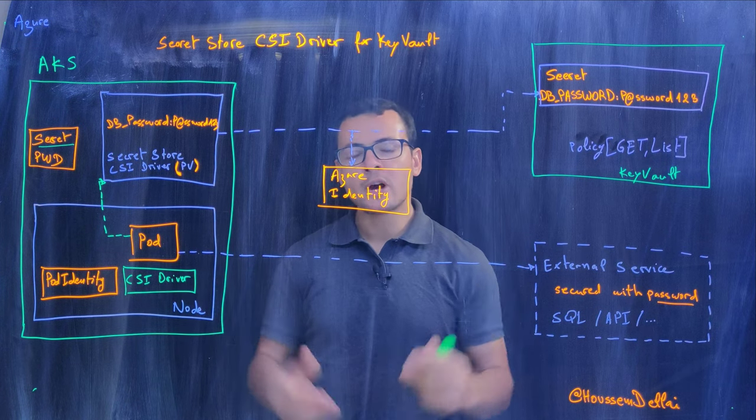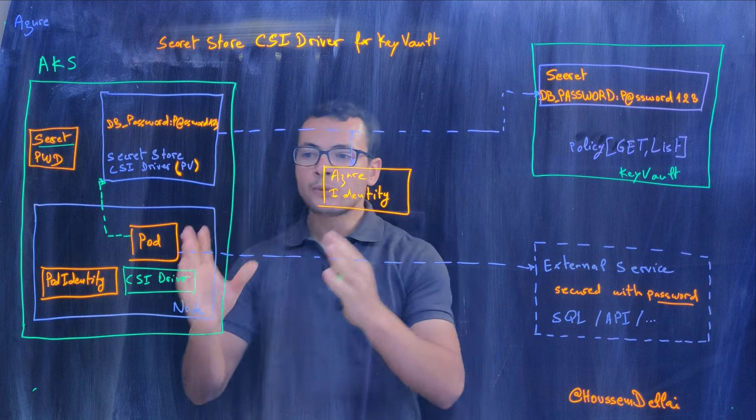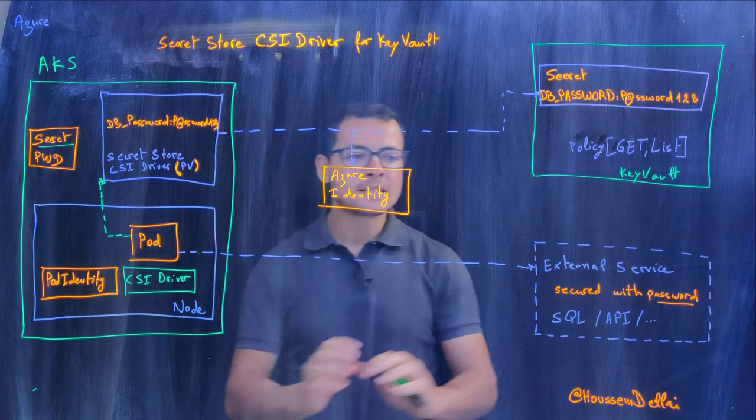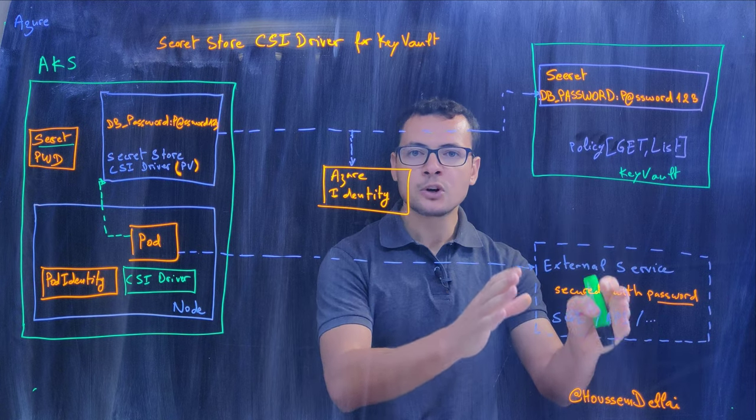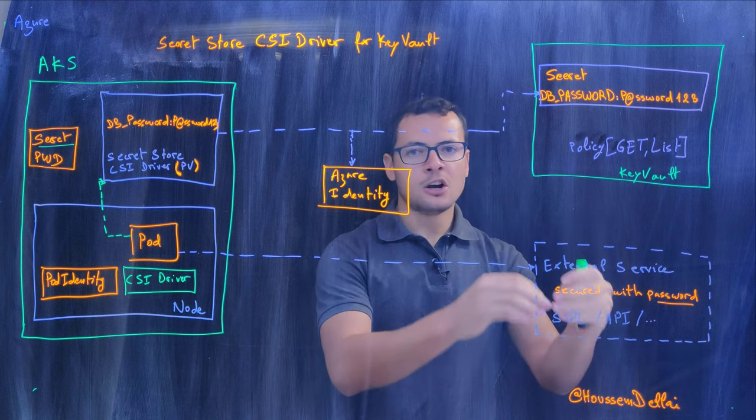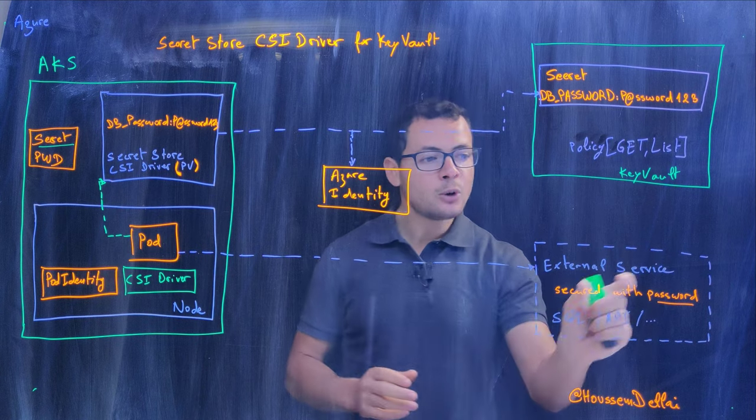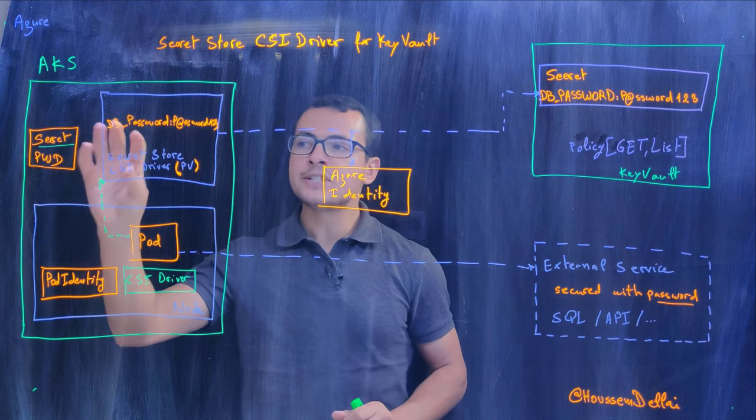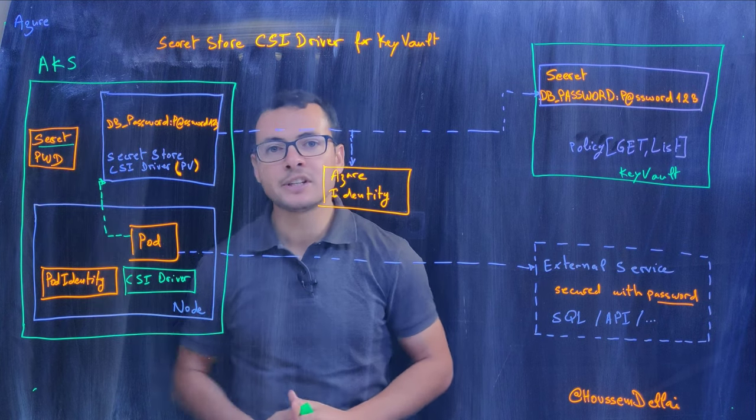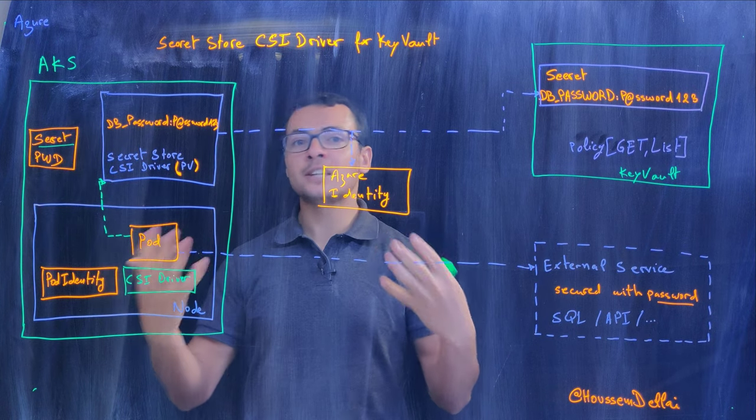The problem we have is that if from within my pod I want to access an external service secured using a password, API token, or certificate, I need to have that password. One solution is to create a secret object inside the Kubernetes cluster itself, but that is not really secure.